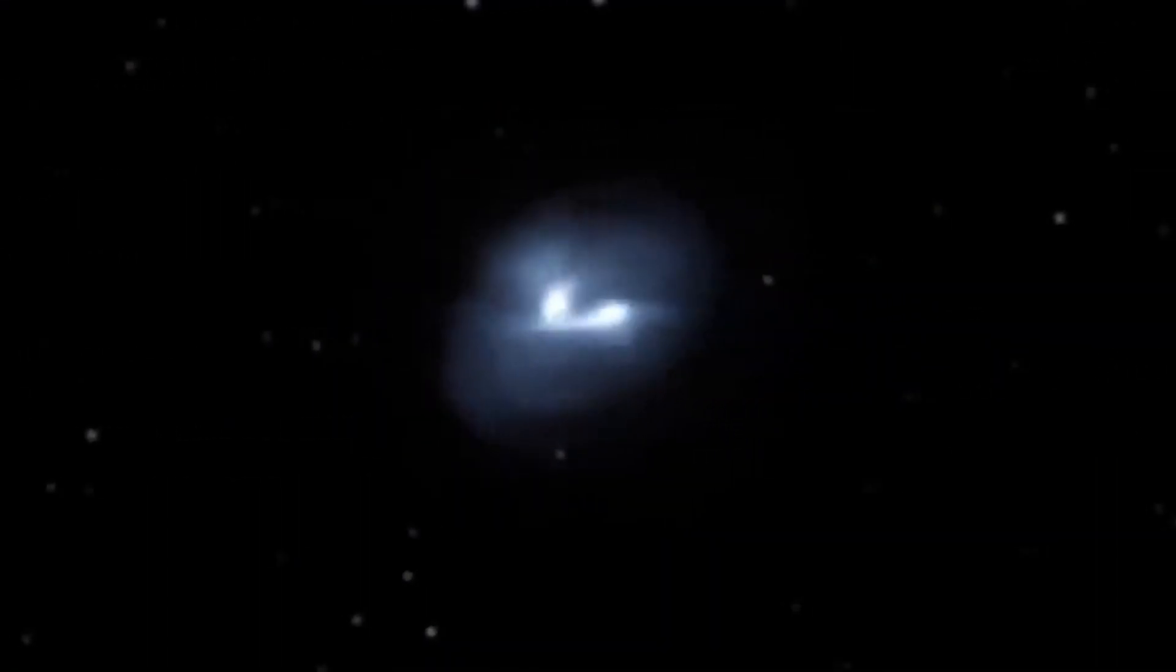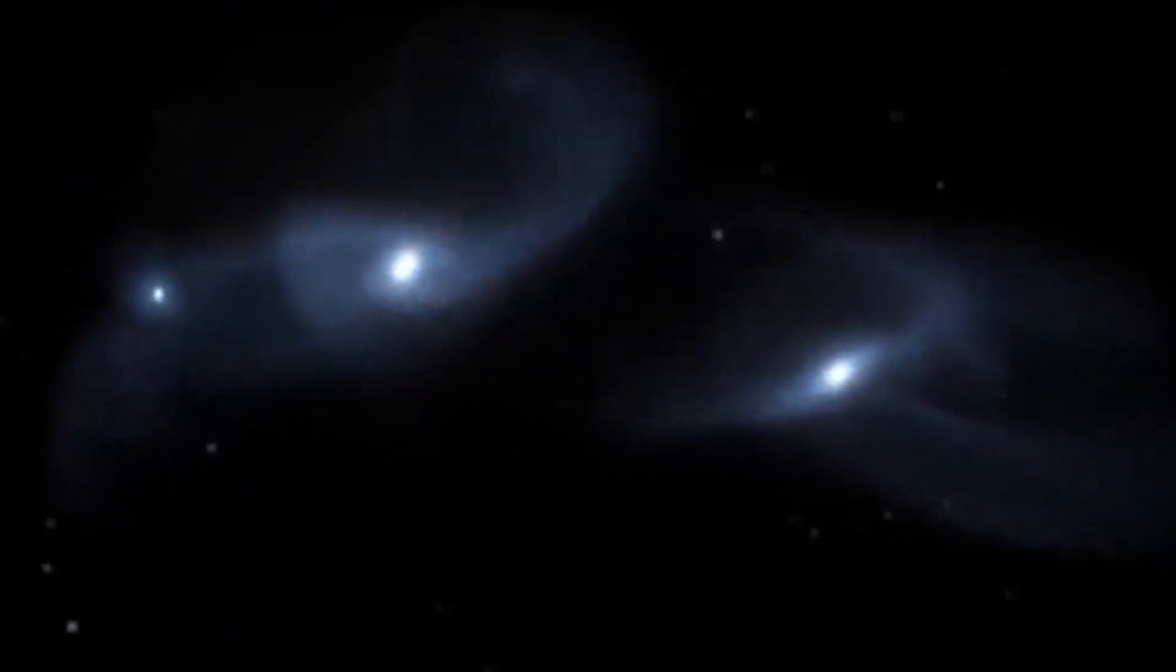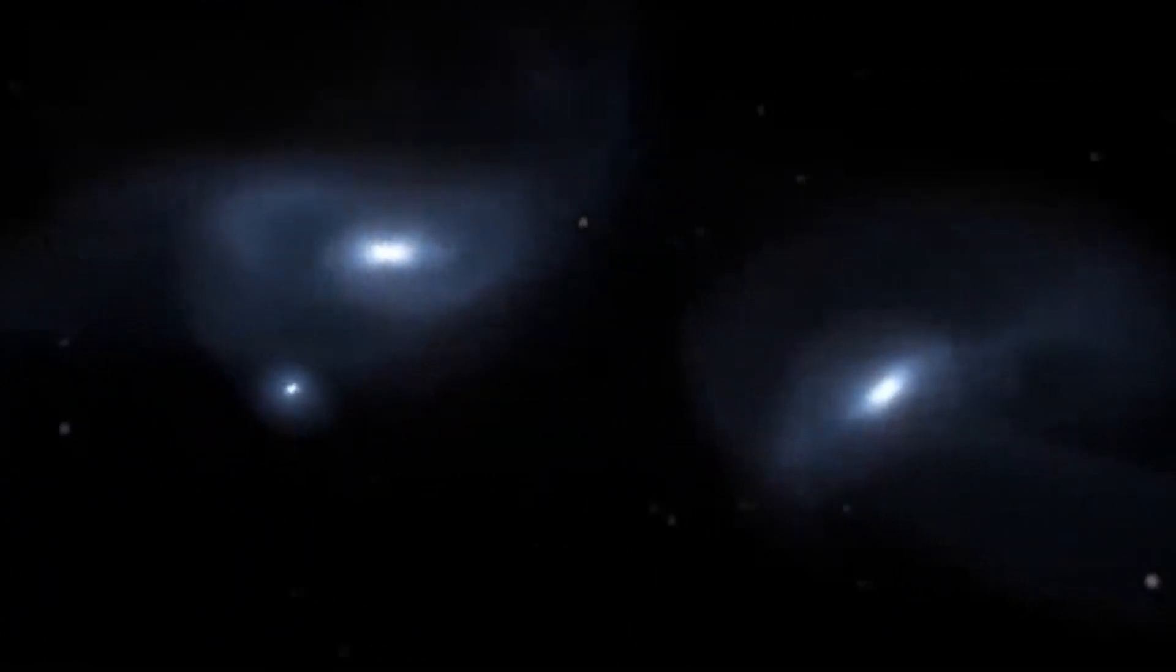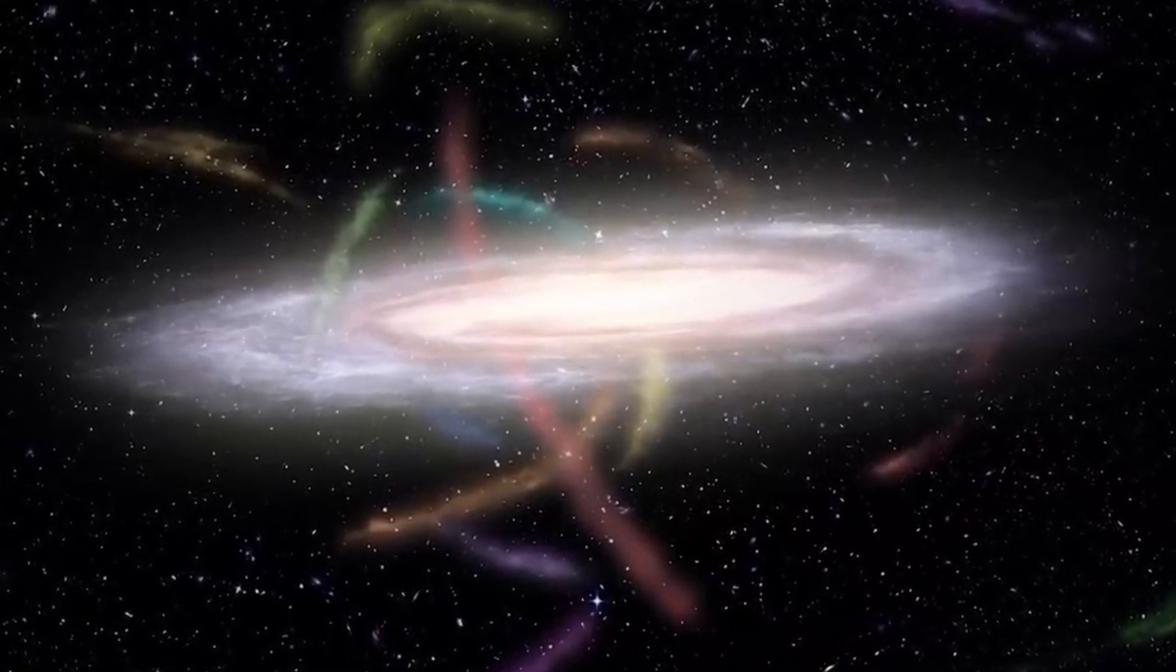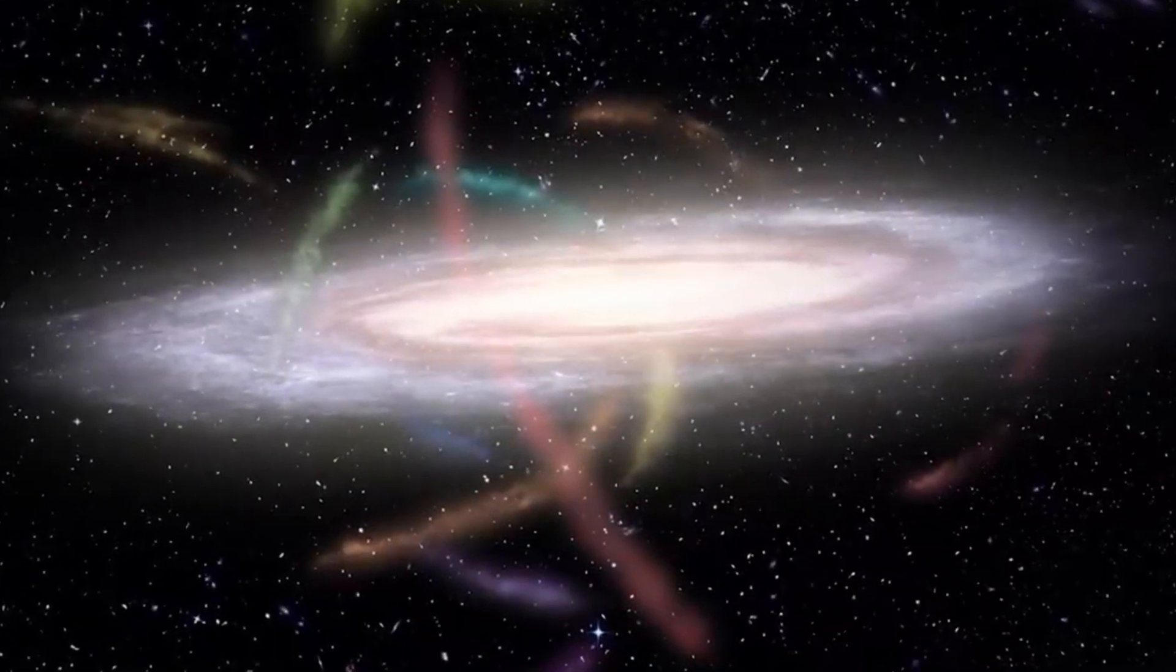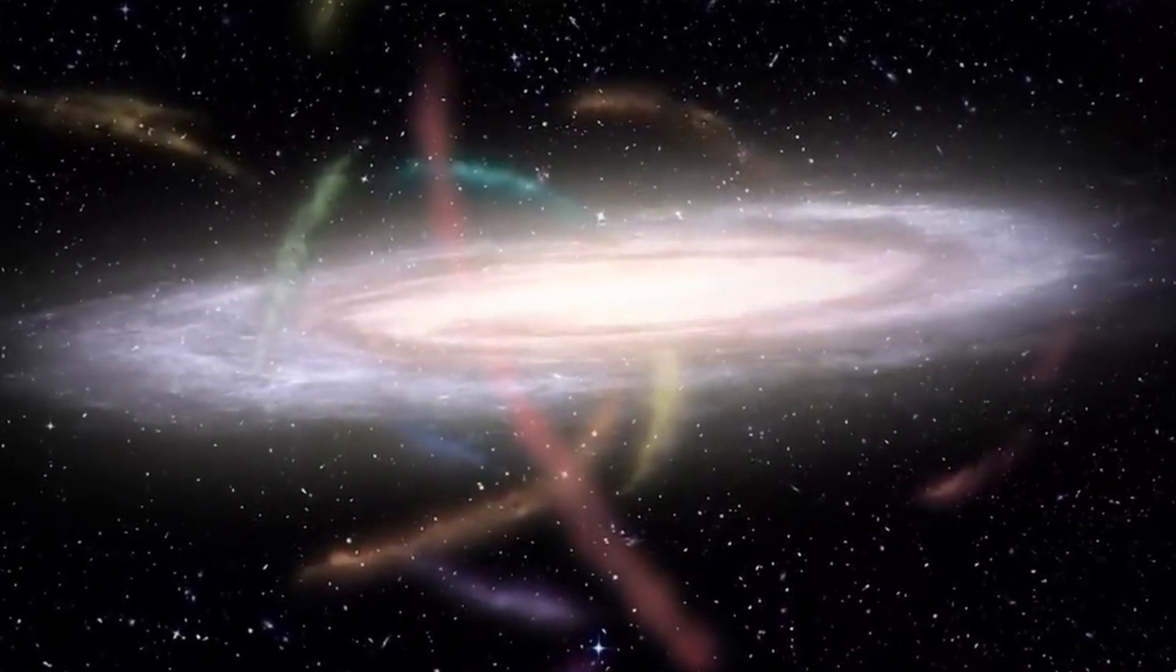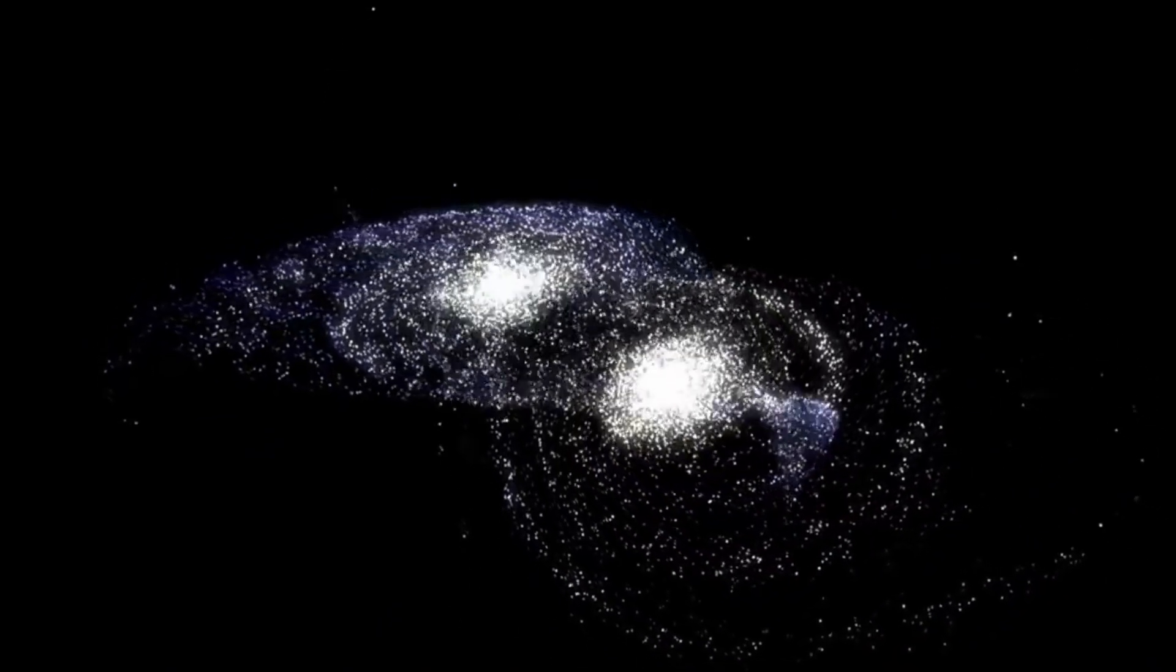Over hundreds of millions of years, the galaxies will destroy each other's fragile spiral structures through immense gravitational tides. Finally, they'll settle into one giant elliptical galaxy, forever changing the stellar landscape. The merger will send the solar system careening into totally new galactic territory. Constellations will disperse and reform. While our planet should survive intact, the cosmos will never be the same.